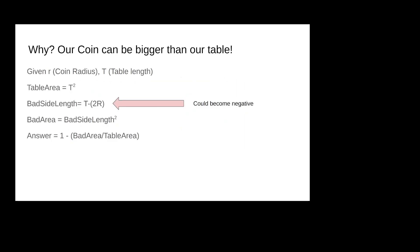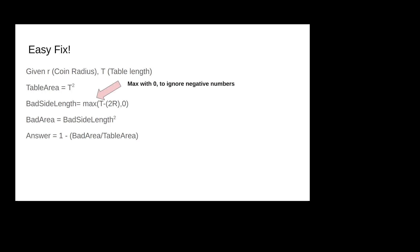However, there is a small edge case: what if the coin is bigger than the table? The side length of the bad area can become negative, and squaring it gives a nonzero value that doesn't represent the problem correctly. The fix is to max the bad area side length with zero before squaring, which ignores negative values and makes the rest of the math work correctly.